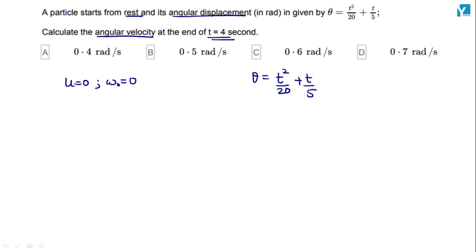We need angular velocity, so initial angular velocity is zero. We should keep in mind that angular velocity omega will be given by d theta by dt. I will take the derivative on both sides with respect to time to find angular velocity.